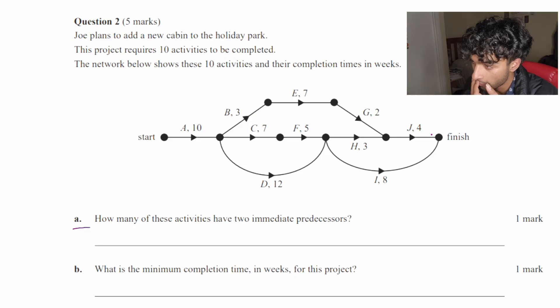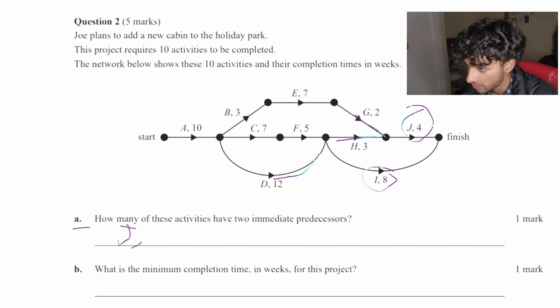So if we look at the first activity, which is on the right, is J. And as you can see, there is two things connected, which means that J is one of the activities that has an immediate predecessor. Then we check I. And as you can see, there's a connection here and a connection here. So that's another activity as a predecessor.